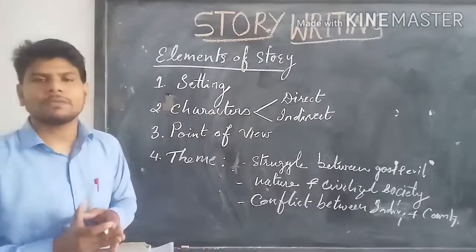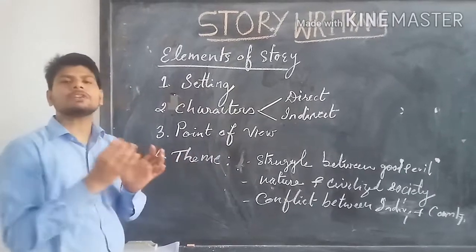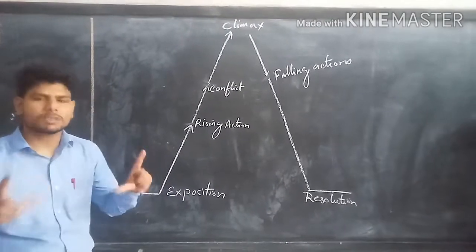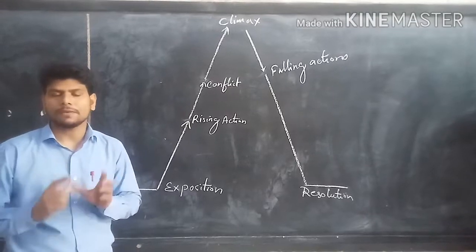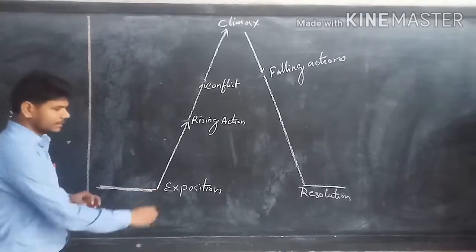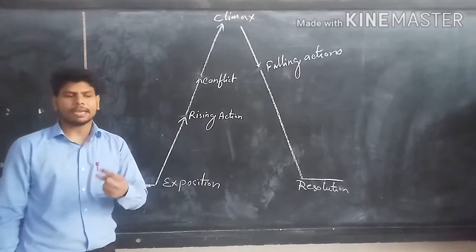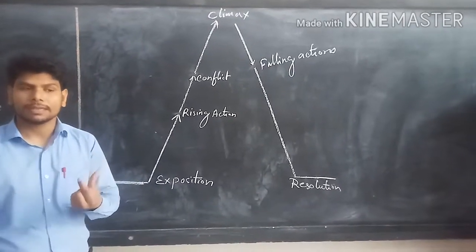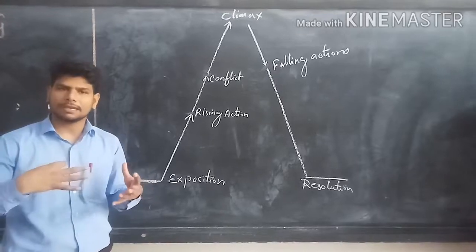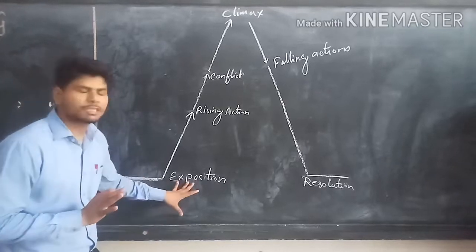The fifth element is sequence and plot — the events of things happening, that is called the sequence. Normally in the sequence of the story, the story begins at a particular point called the exposition. Exposition means the introduction of the characters, the story, and the relationships between the characters. All these things are introduced at this stage, and that is called the exposition.